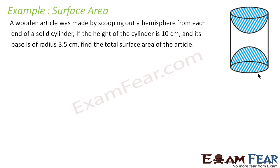Let us take one more example. The question says: a wooden article was made by scooping out a hemisphere from each end of a solid cylinder. Here also, it is solid, so we should take the base area. But if you see this, the ends are hollowed out — the blue parts are all hollow — so these two base areas are gone.